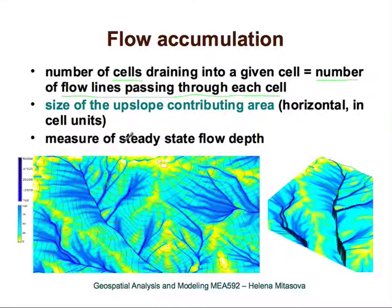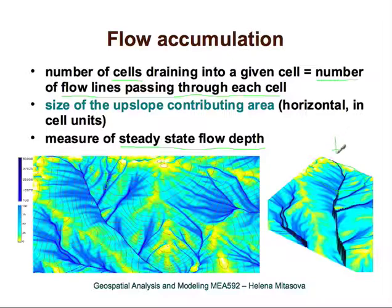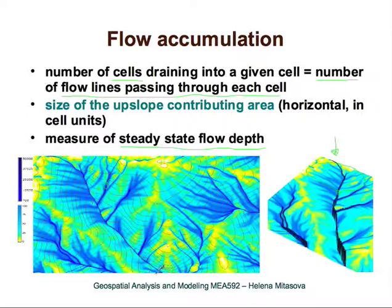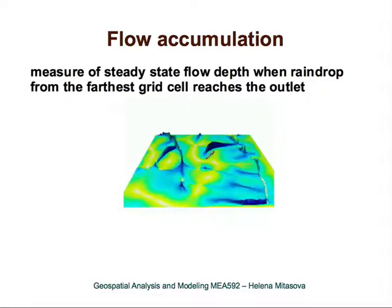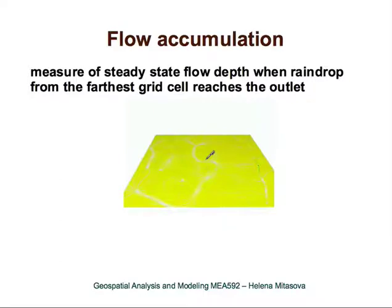Flow accumulation is a measure of steady state flow depth and has a direct relation to overland flow. In a three-dimensional view, you can see that water accumulates in the valleys and the contributing area increases as we get closer to the outlet. This essentially shows the distribution of the amount of water flowing through the watershed — no water on the ridges, and maximum accumulation at the outlet.